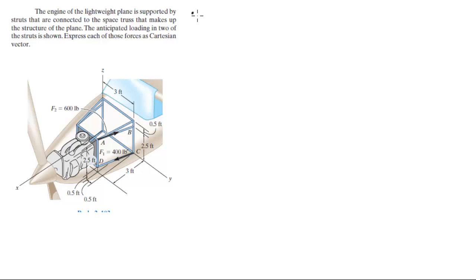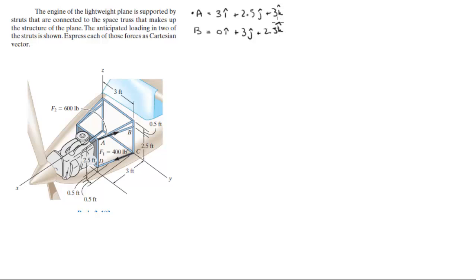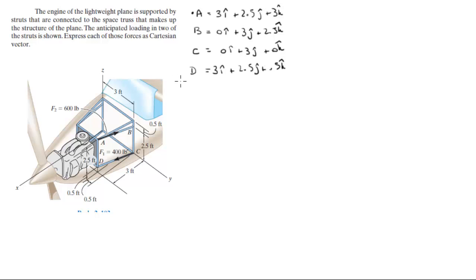First, you've got to find the position vectors. A sits at 3i plus 2.5j plus 3k. B sits at 0i plus 3j plus 2.5k. C sits at 0i plus 3j plus 0k. D sits at 3i plus 2.5j plus 0.5k.